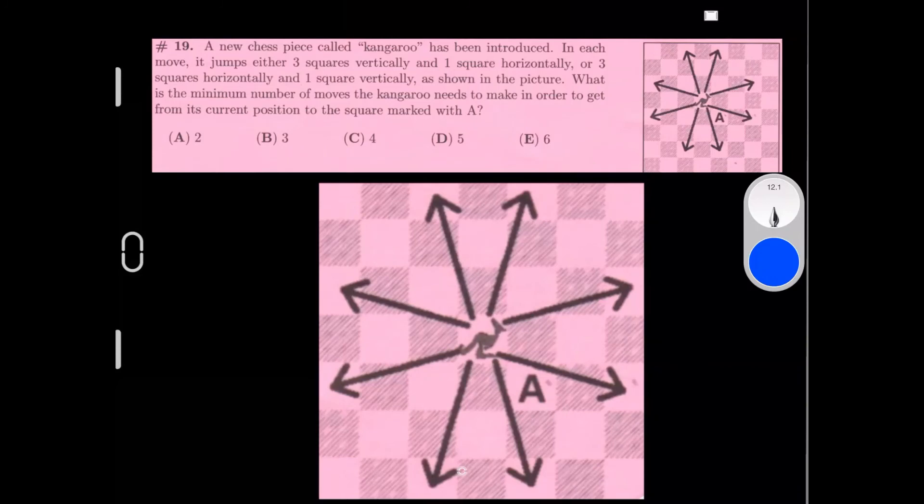A new chess piece called kangaroo has been introduced. In each move, it jumps either 3 squares vertically and 1 square horizontally, or 3 squares horizontally and 1 square vertically, as shown in the picture. What is the minimum number of moves the kangaroo needs to make in order to get from its current position to the square marked with A?